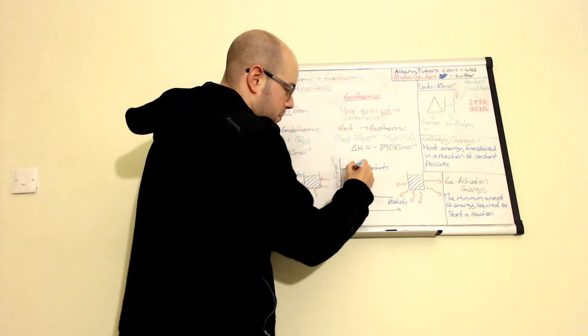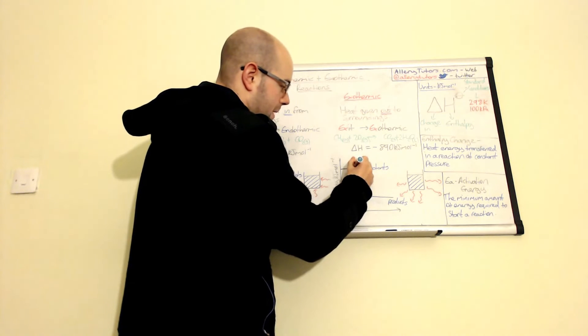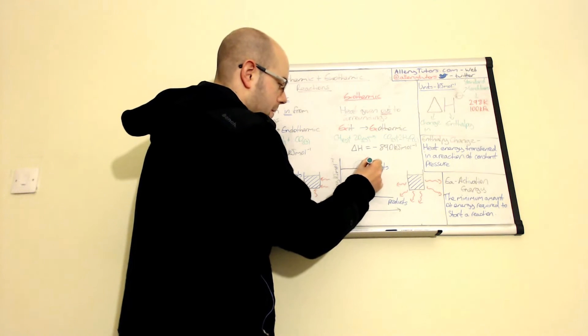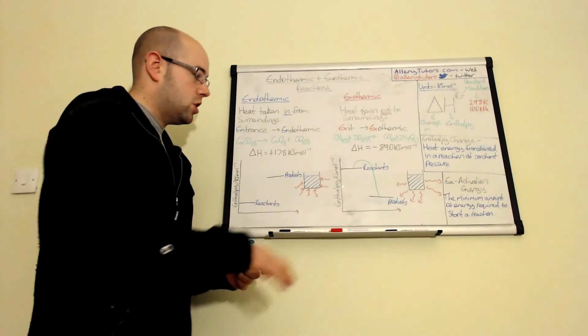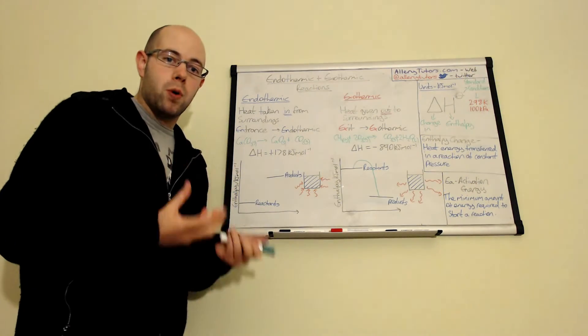So we need some energy, we put the energy in, just a small amount of energy to break our bonds. And then what happens is we actually produce our products which are actually lower in energy, which means they're more stable.